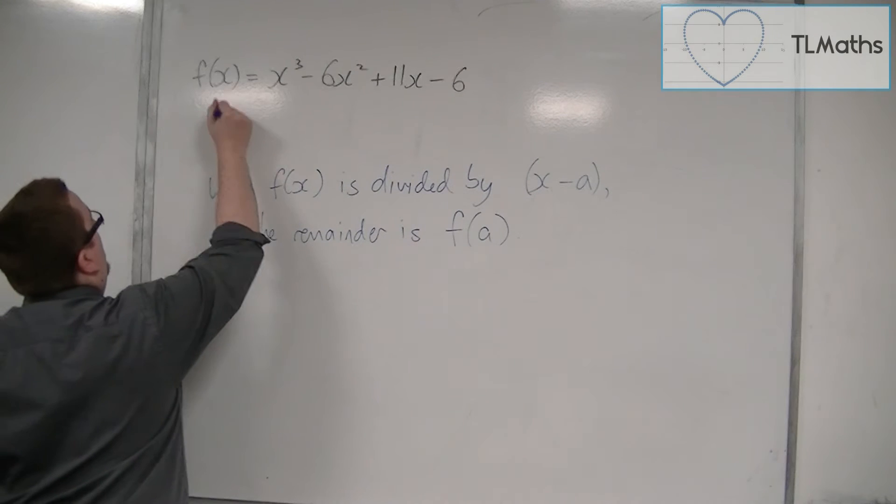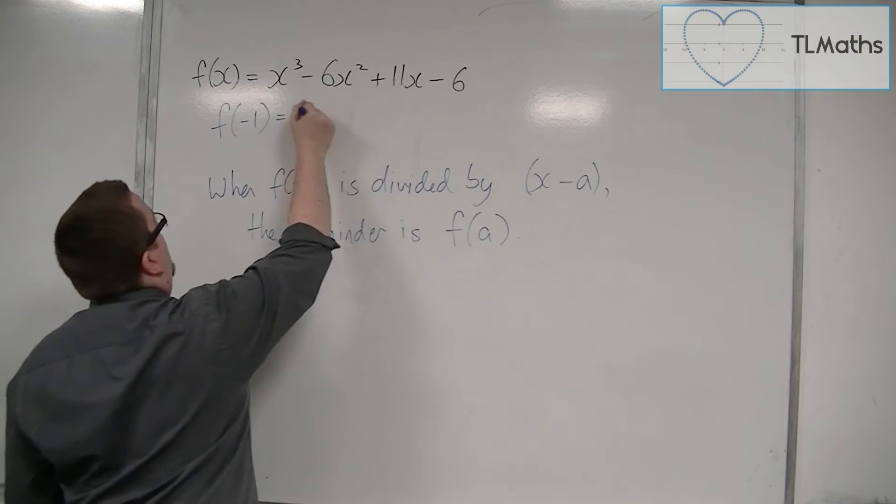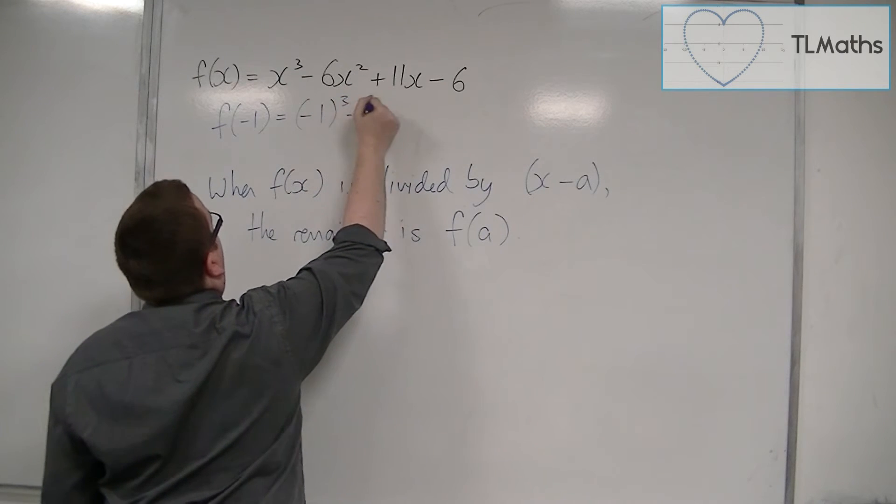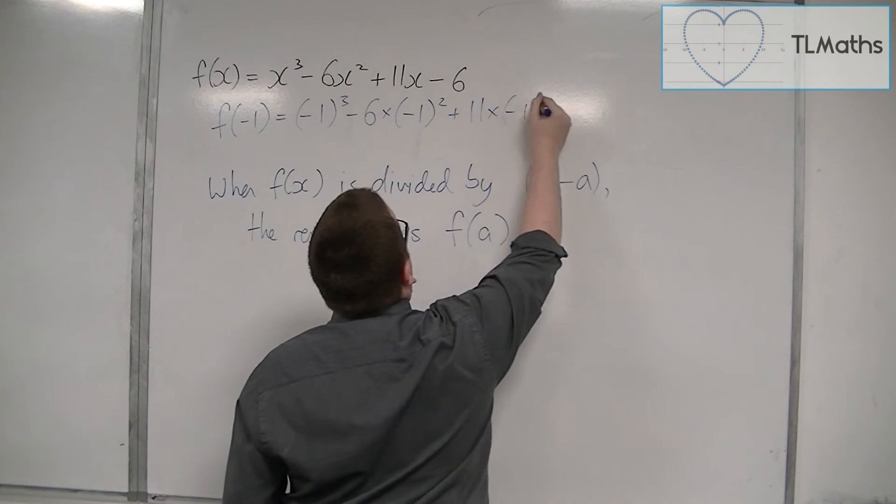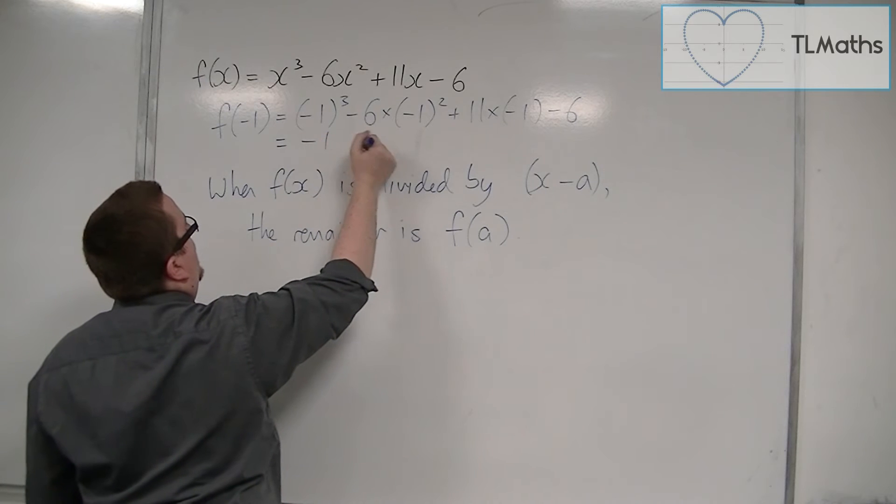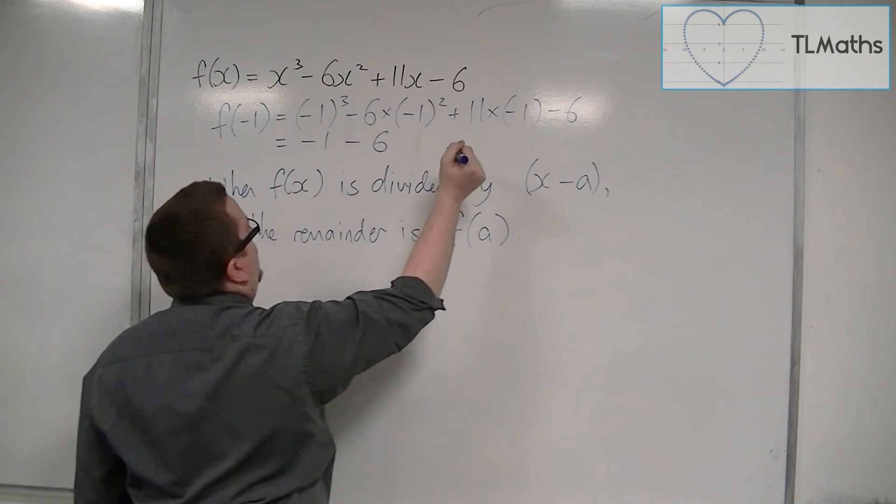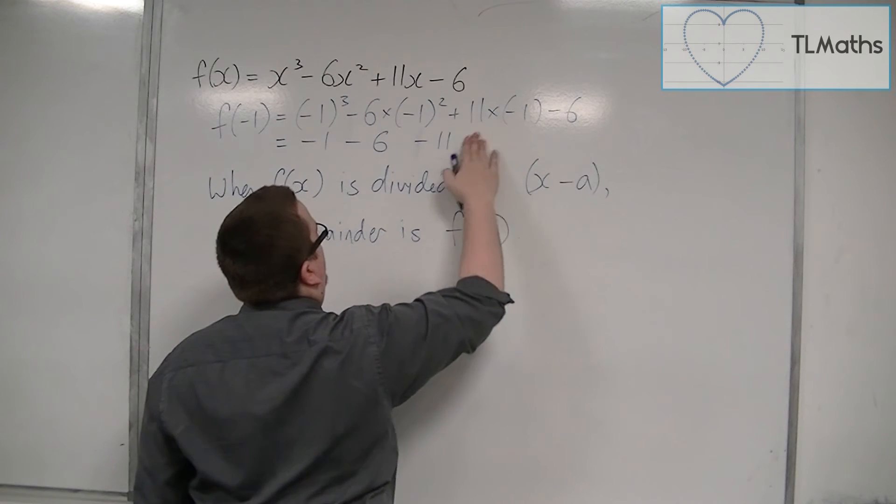So if we think about f(-1), then we have (-1)³ - 6(-1)² + 11(-1) - 6. So that's -1 - 6 - 11... oh sorry, -6.